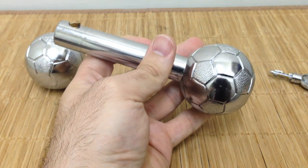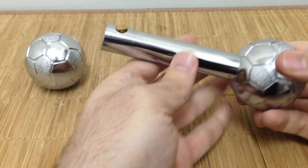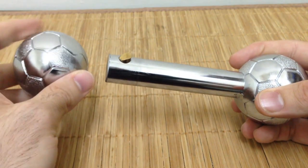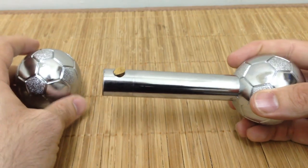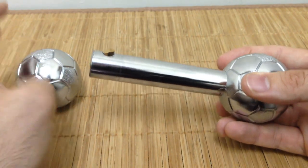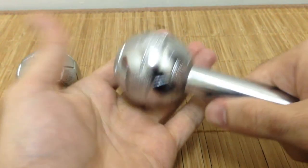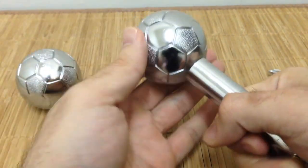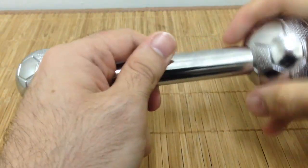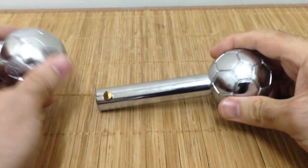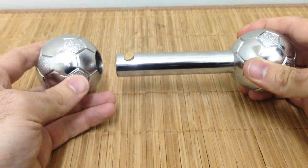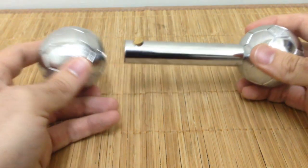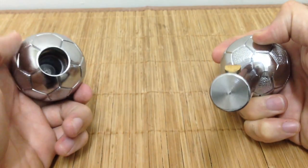This thing all together weighs 1.2 kilos and that's 2.6 pounds. So it really feels like you could use this as a weapon or something like that or even a real dumbbell. It has some weight to it. So it would be a nightmare to try to hit this or pry this off. And it would take you a bunch of time to even cut this off.